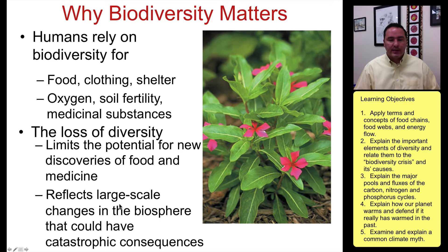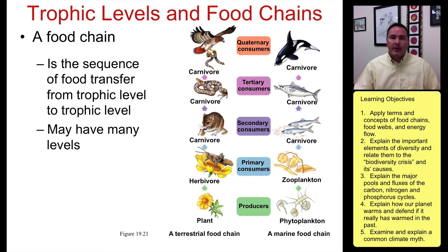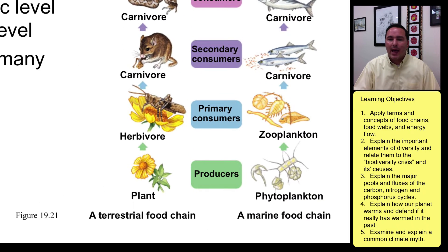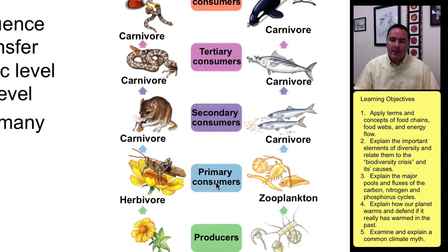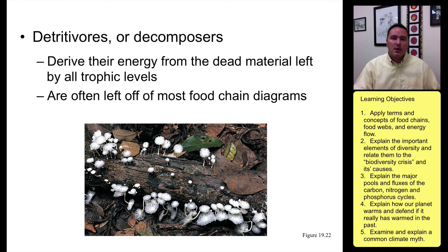These losses are reflected at a large scale in the biosphere and could have catastrophic consequences. In a community we can look at trophic levels of a food chain: producers — plants and phytoplankton — then primary consumers, secondary consumers, and tertiary consumers. Detritivores and decomposers are also an important part because they recycle energy from dead material left over at all trophic levels.